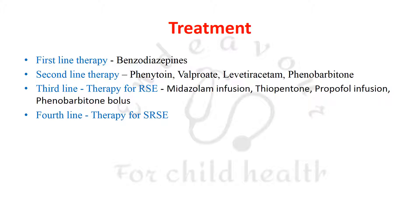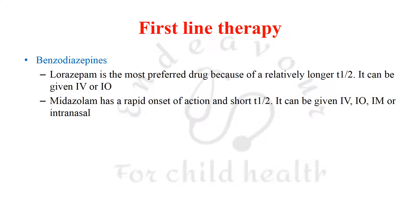Management of status epilepticus is divided into four tiers. First-line therapy consists of benzodiazepines for acute cessation of seizures. Second-line therapy — phenytoin, valproate, levetiracetam, and phenobarbitone — is used for long-term control with loading and maintenance doses. Third-line therapy for refractory status epilepticus includes midazolam infusion, thiopentone, propofol infusion, and phenobarbitone bolus. Fourth-line therapy addresses super-refractory status epilepticus.